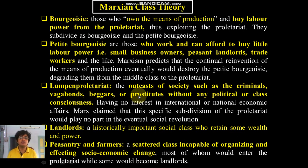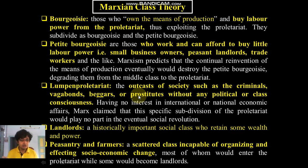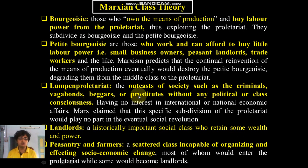Having no interest in international, national, or any form of economic affairs, Marx called the lumpen proletariat — this specific subdivision of the proletariat — as those who would play no part in the eventual social revolution. Marx also talked about other social classes like the landlords, a historically important social class who retain some wealth and power. And of course there are peasants and farmers, a scattered class incapable of organizing and affecting social economic change.